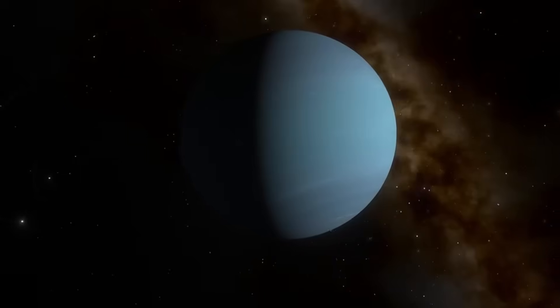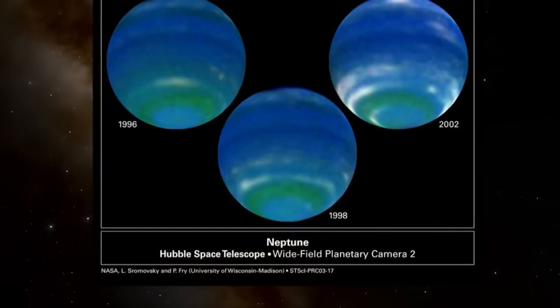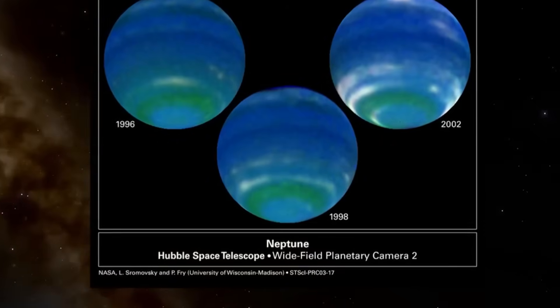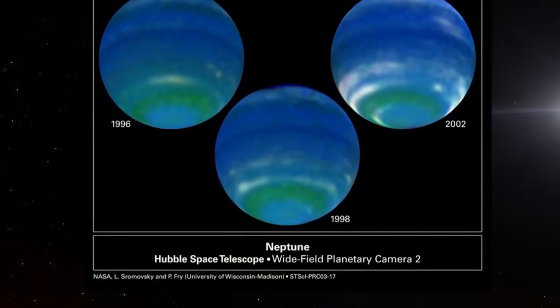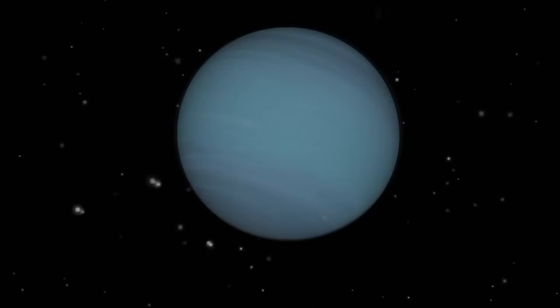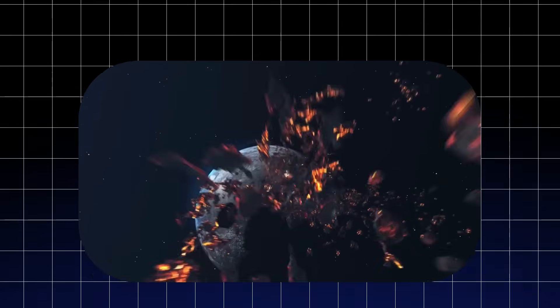Neptune, known for having a wildly misaligned and rapidly rotating magnetic field, responded to the impact with sudden fluxes in magnetospheric activity. The planet's auroras, already mysterious and not fully understood, intensified to levels never previously recorded. These glowing polar lights shimmered in spectral hues far beyond visible light, Webb's infrared instruments capturing elaborate swirling patterns that hinted at deep interactions between the incoming object's mass and Neptune's magnetic sheath.